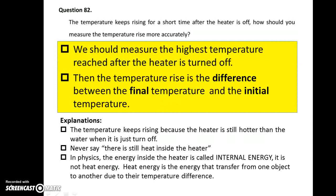Question 82. The temperature rises for a short time after the heater is turned off. How do we measure the temperature rise more accurately? We should measure the highest temperature reached after the heater is turned off, and then find the difference between that final highest temperature and the initial temperature.